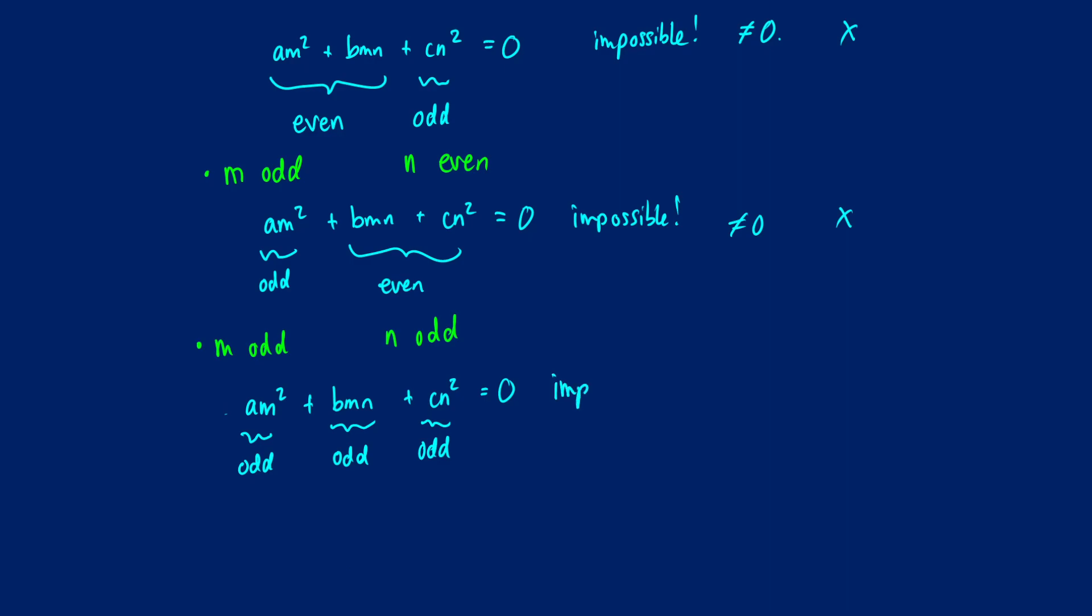So this, once again, is impossible. So we do not have that this can equal 0.